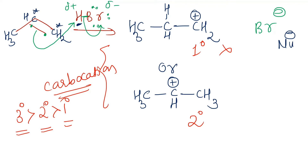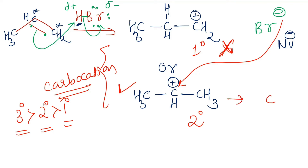The nucleophile (Br⁻) attacks the secondary carbocation, and the product formed is CH₃–CHBr–CH₃. This is the product for this particular reaction.